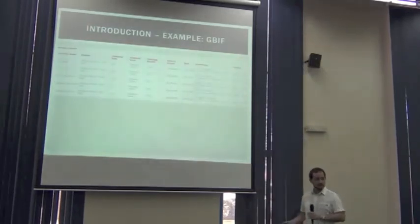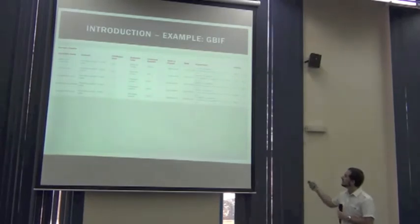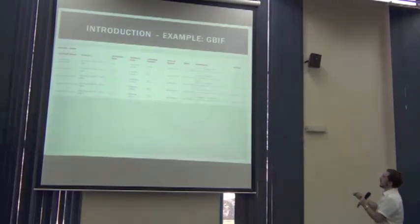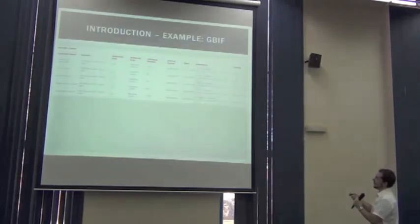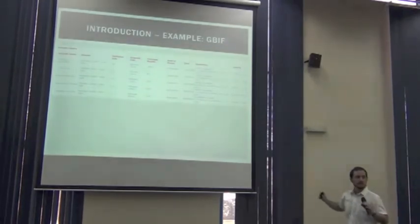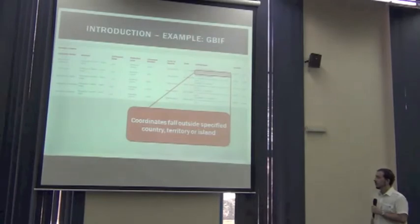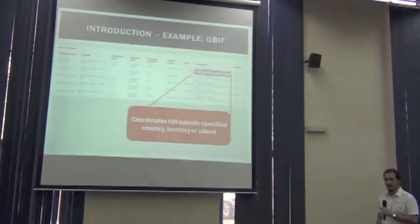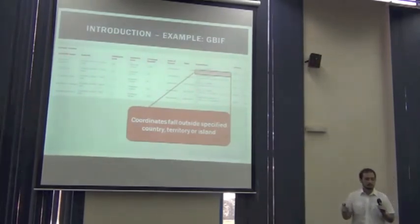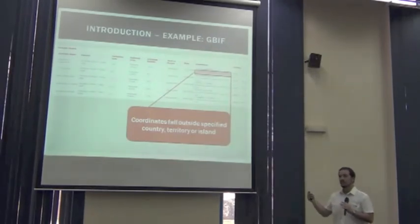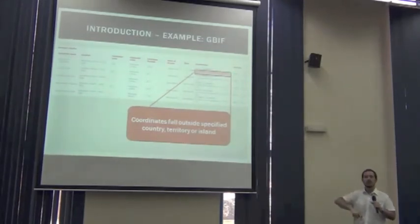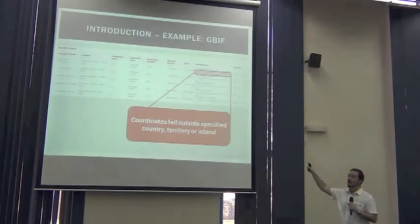For example, if we make a search, we might have something like a table of the records for that search. There's a field called coordinates which contains the coordinates of those records. But below the coordinates, there's a little piece of text that says 'coordinates fall outside specified country, territory or island.' That means coordinates are given, a country is given, but they do not match. That's a perfect example of error flagging — they do not modify the coordinates because they are not allowed to, but they alert the user.